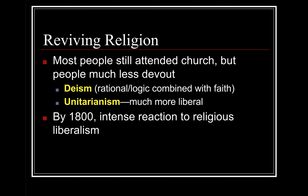Looking at religion, most people still attended church but were considered much less devout. Two types of religious ideas emerged during this time: deism, which combines the rational and logical with faith, and unitarianism, which was much more liberal. By 1800, there was an intense reaction to these forms of religious liberalism, and this is what sparked the Second Great Awakening.